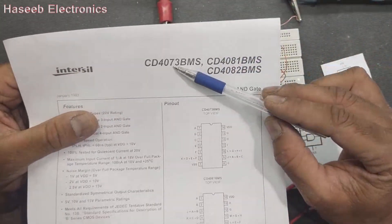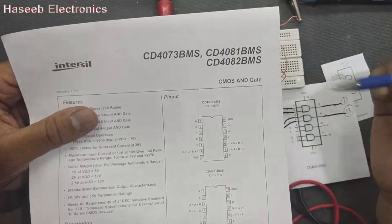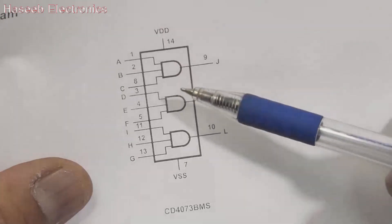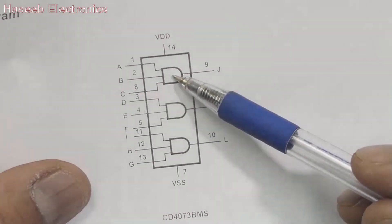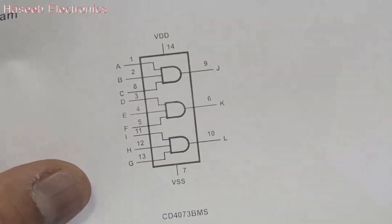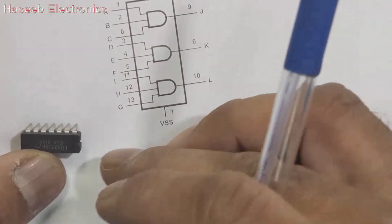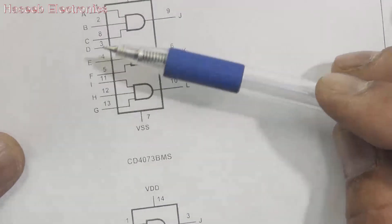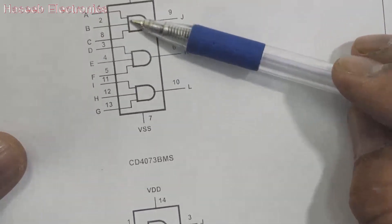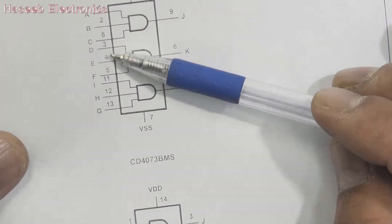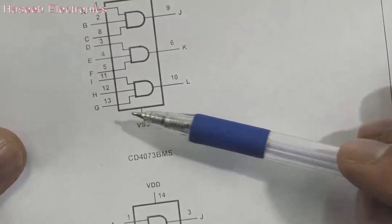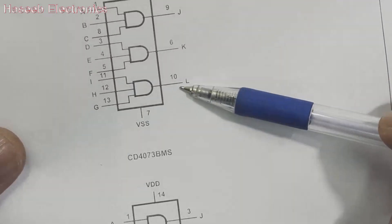In the AND gate family, we have 3 types of ICs: 4073, 4081, and 4082. IC 4073 is a triple 3-input AND gate — it has 3 gates in the IC and is a 14-pin IC. All these ICs are 14-pin. Pins 1, 2, and 8 are inputs for the 1st gate, and output is at pin 9. Pins 3, 4, 5 for the 2nd gate, output at pin 6. Pins 11, 12, and 13 are inputs for the 3rd gate, output at pin 10.